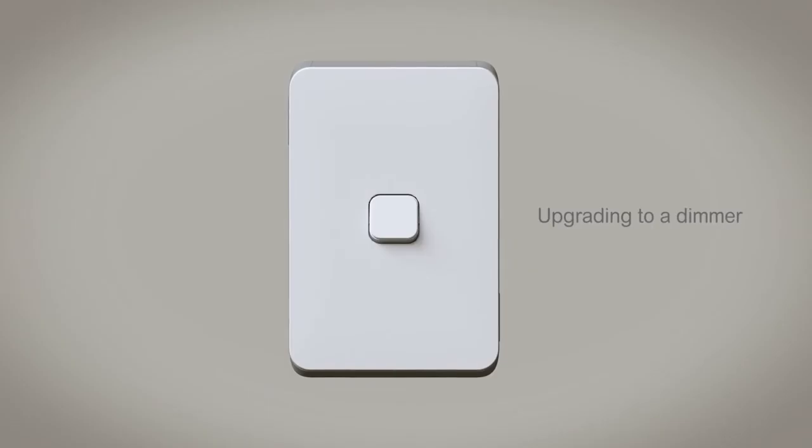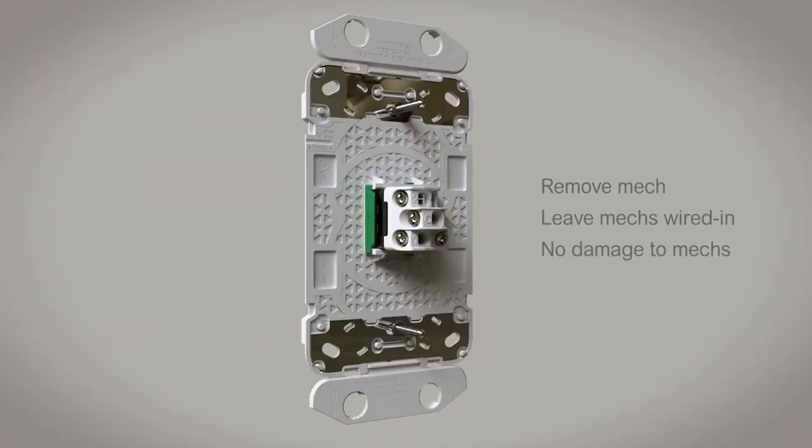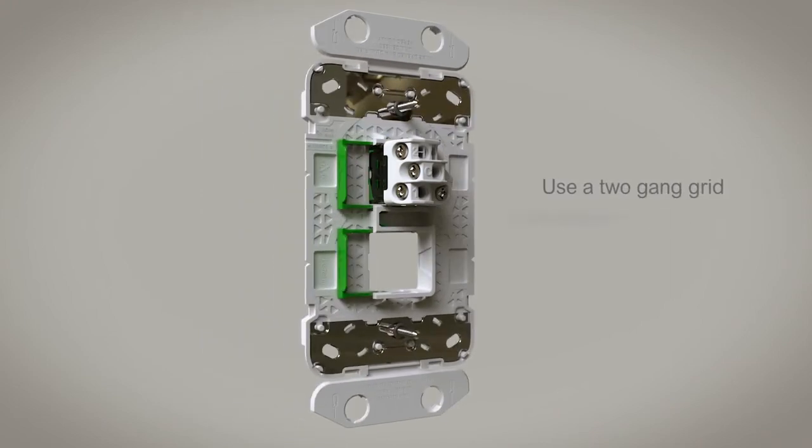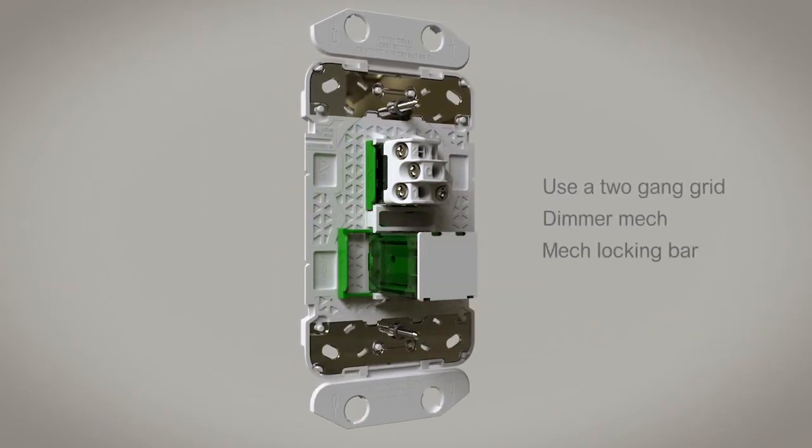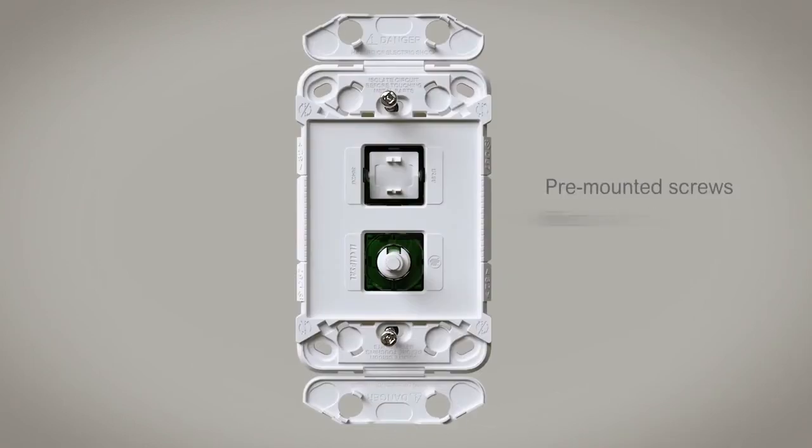If your customer wants a dimmer added, remove the one-gang grid, unlock the mech leaving it wired in, and use a two-gang grid. Then add a dimmer mech and lock it all in. Simply terminate the dimmer, fit off, and shut the safety flaps.